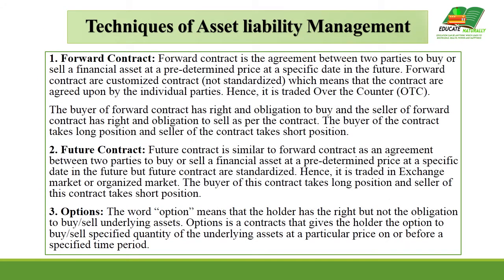Now, techniques of asset liability management. The first technique is a forward contract. A forward contract means an agreement between two parties under which the buy or sell of a financial asset occurs at a predetermined price at a specific date. Forward contracts are customized contracts, not standardized, meaning the contracts are agreed upon by the individual parties — a mutual agreement. They can also be traded over-the-counter (OTC).